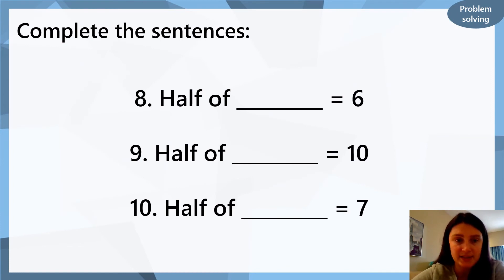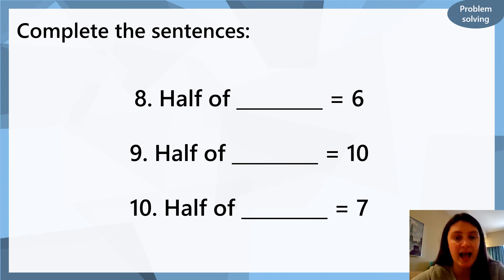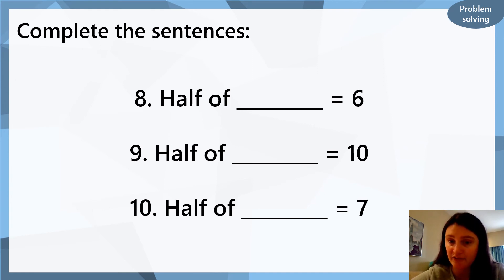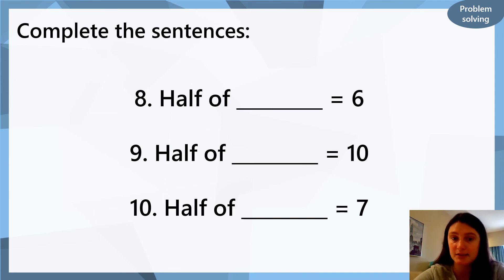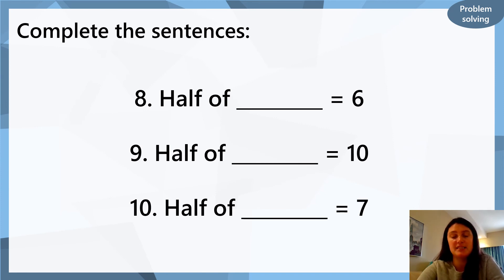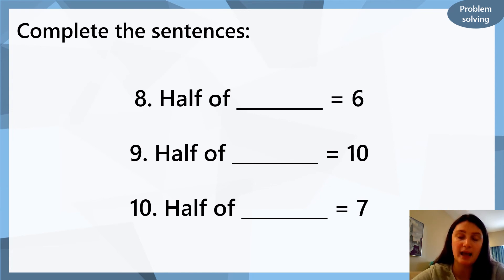Okay, our last questions today are questions eight, nine, and ten. Question eight: half of something equals six. Question nine: half of something equals ten. Question ten: half of something equals seven. So now we know what half is, and we need to find out what the whole is. We can draw our two big circles — for question eight put six dots in each circle, for question nine put ten dots in each circle, and for question ten put seven dots in each circle. Then count them up and write the answer.